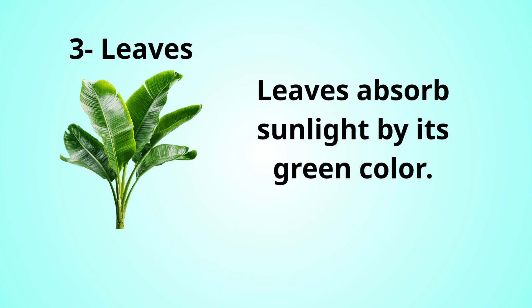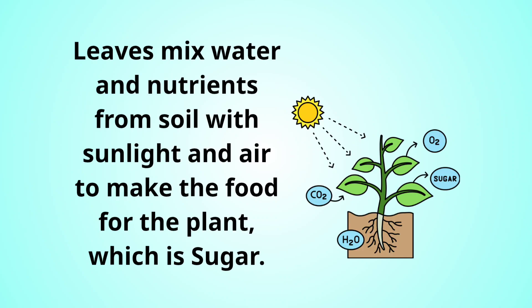Leaves absorb sunlight by their green color. But how can the leaves make the food for the plant? Well, leaves mix water and nutrients from the soil with sunlight and air to make food for the plant. What is the food for the plant? Sugar. So, the leaves will make sugar for the plant.